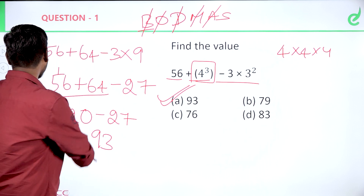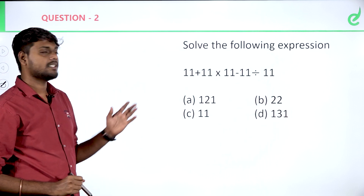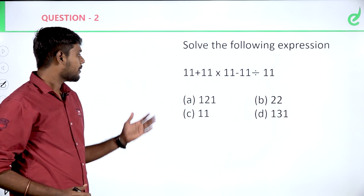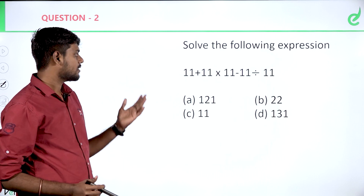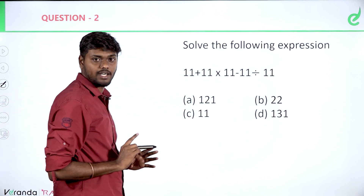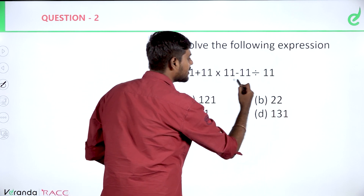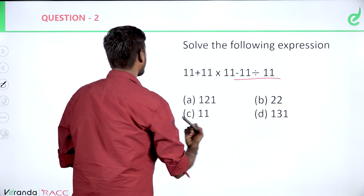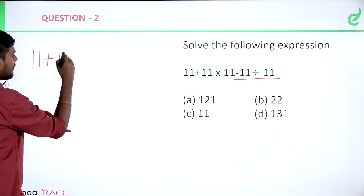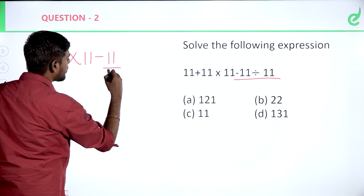Okay, understand? Same — that is the equation. First, brackets? No. Off? No. Next, division — division first. Division is here. Now the question is: 11 plus 11 into 11 minus 11 divided by 11.